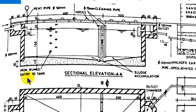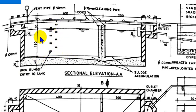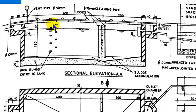Iron rungs provide entry to the tank. This wall has a range of steps with a 1.5 m grill, positioned above 30 cm. A step arrangement acts as a ladder.